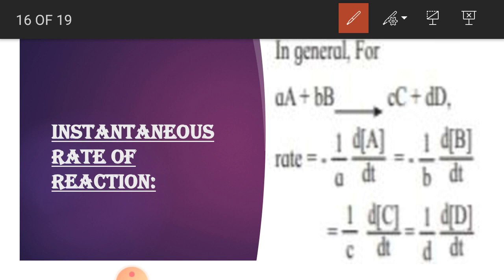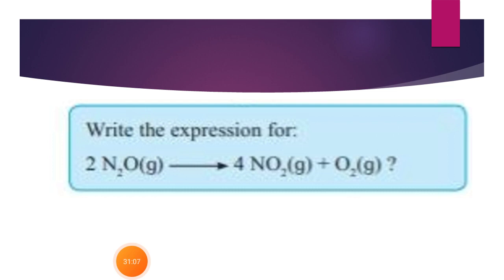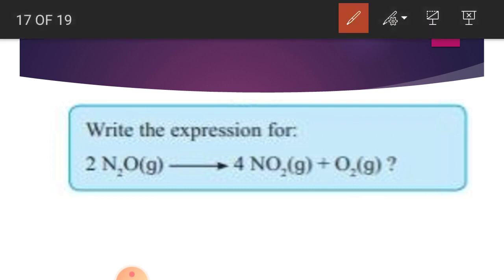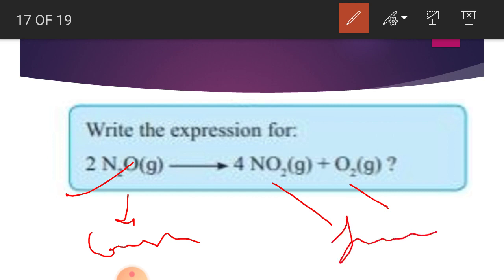In general, for any reaction given, you are supposed to find out the rate of chemical reaction in this way. This is a homework for you, students: write the expression for this reaction - 2N₂O is consumed and the products are formed. You are supposed to write down the rate of this reaction. In the next lecture, I will give you the solution. Till then, try it by yourself and write down the rate of this reaction. Thank you, students.